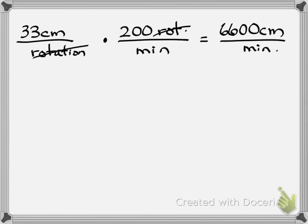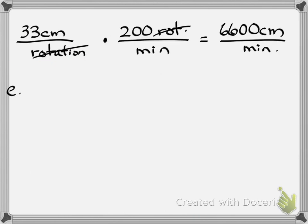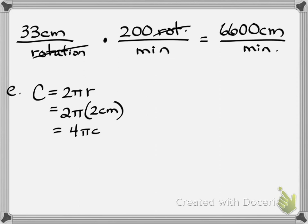Part E: how far does a point on the inside track travel in one rotation? On the inside track, the radius is 2 centimeters. So C equals 2 pi R – it's 2 pi times 2 centimeters, which is 4 pi centimeters, or approximately 12.6 centimeters per one rotation. That's how far we travel on the inside track in one rotation.